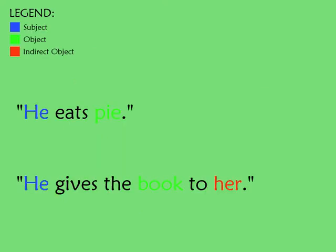You've likely heard of the subject and object of a sentence. The subject is basically just the doer of something, and the object is the thing that is having something done to it. For example, in the sentence 'he eats pie,' he is the one doing the eating, and the pie is being eaten. Therefore, he is the subject, and pie is the object.